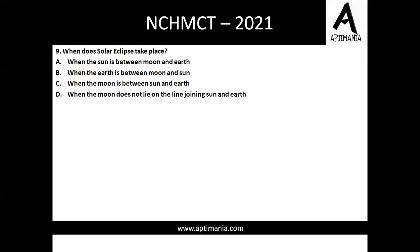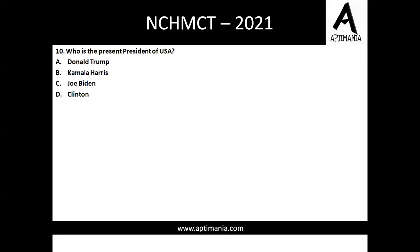Question nine: when does a solar eclipse take place? A solar eclipse occurs when the moon comes between the sun and the earth — option C is the correct one. Question ten: who is the present president of the USA? Joe Biden is the correct answer.